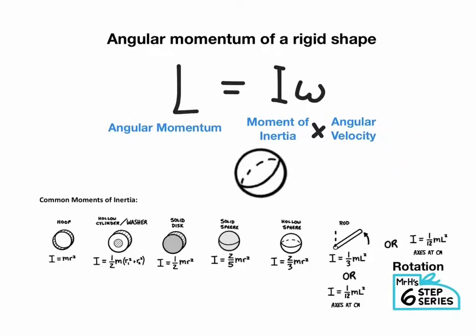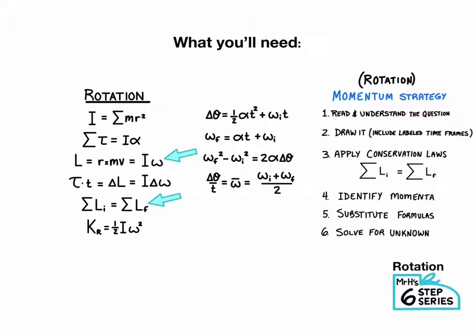For a rigid shape, we say it has angular momentum L equals I omega, where L is angular momentum, I is moment of inertia, and omega is angular velocity. You're going to want to become familiar with your equation sheets and where to find the equations for angular momentum and conservation of angular momentum.